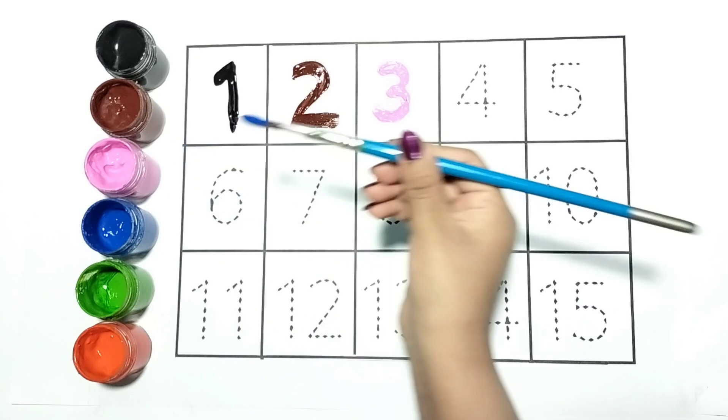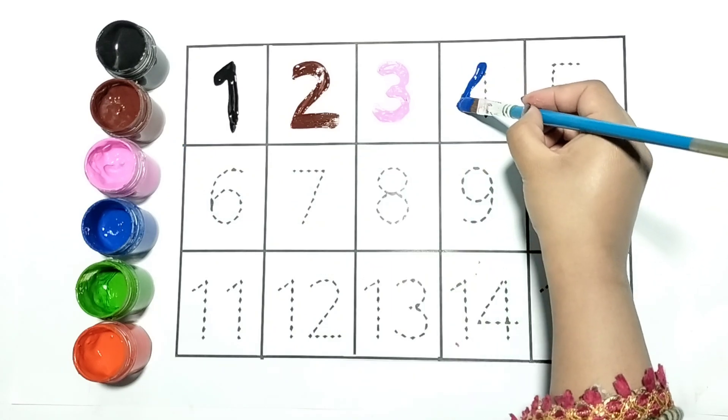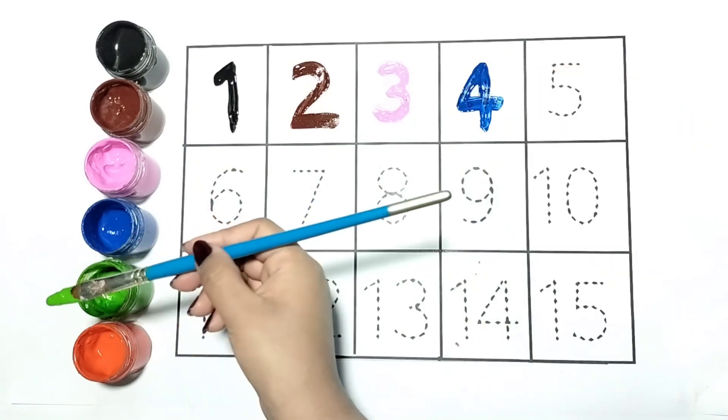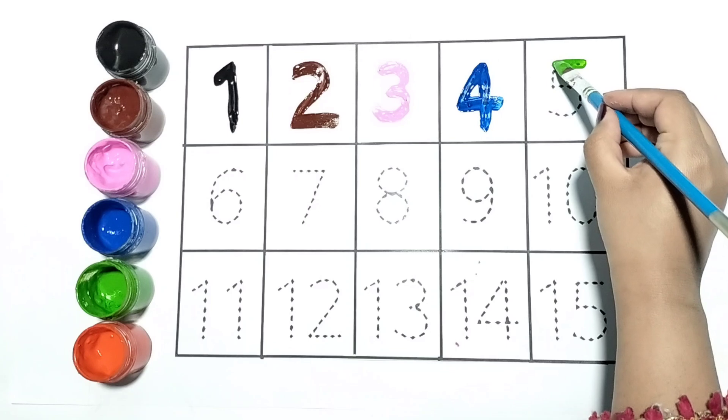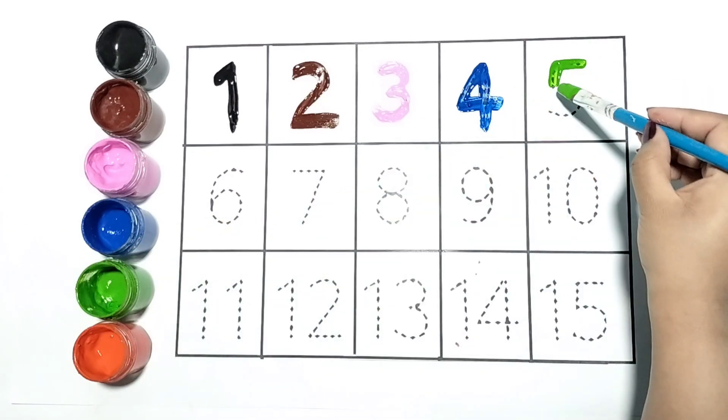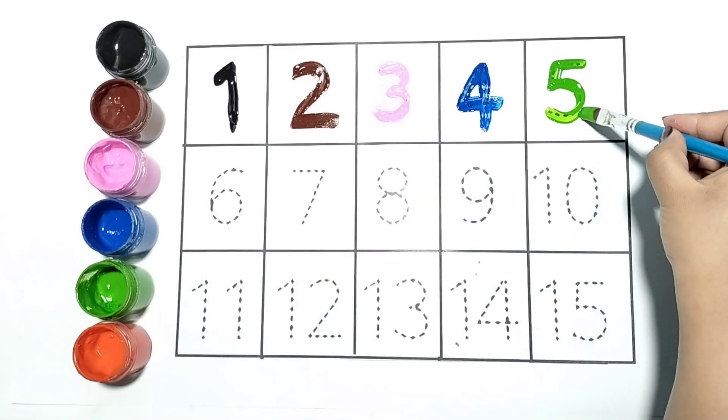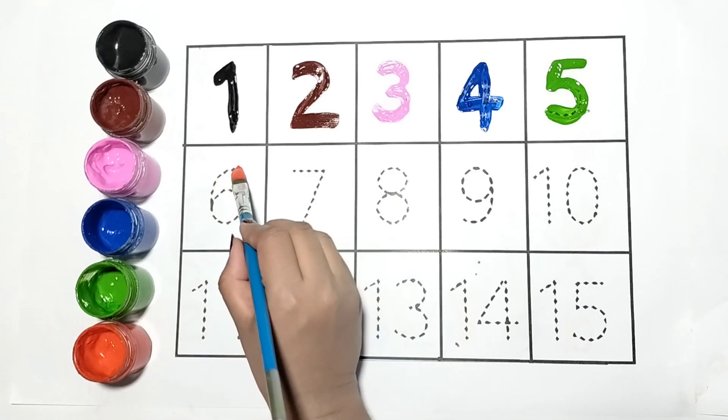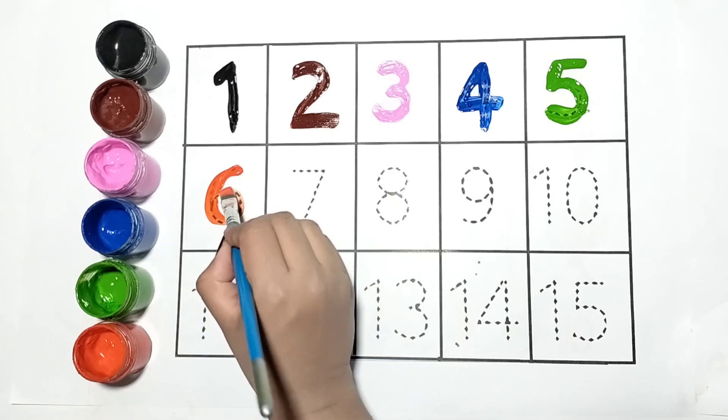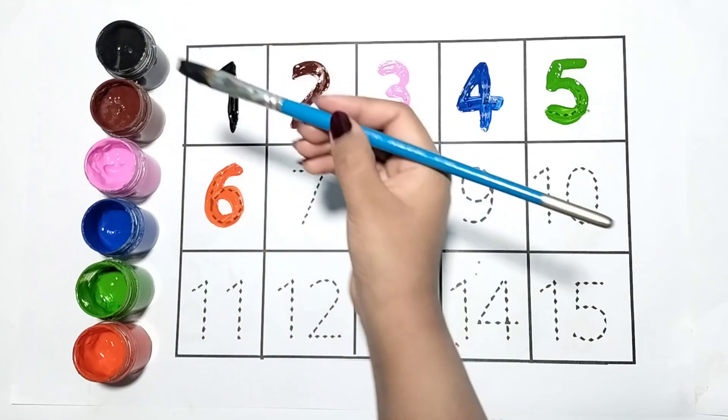This is number three, it is in pink color. This is number four. Next number is five, kids repeat with me. This is number five, I am writing it with green color. Now let's write six with orange color.